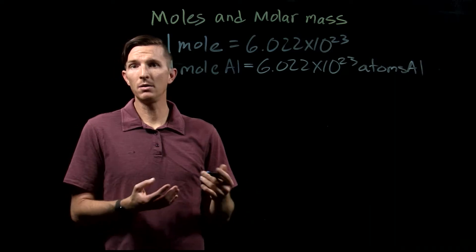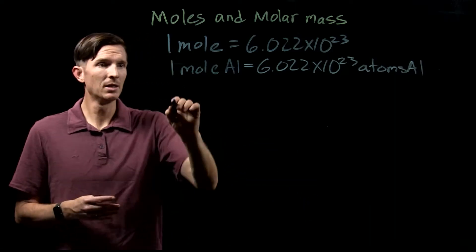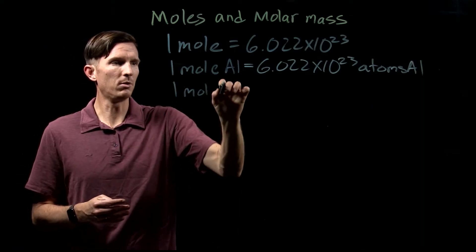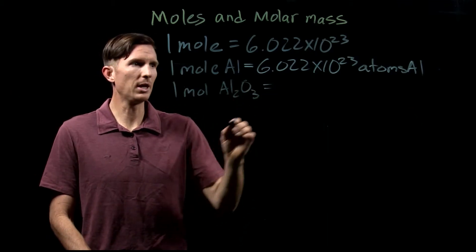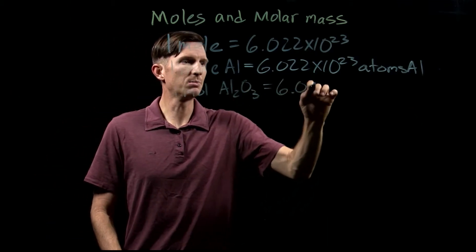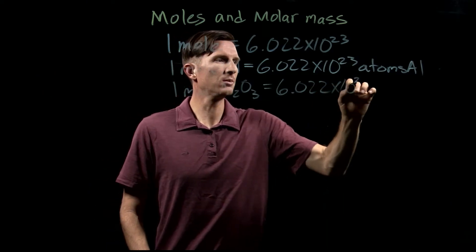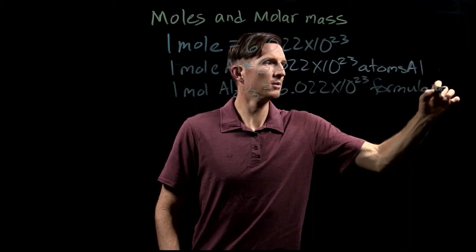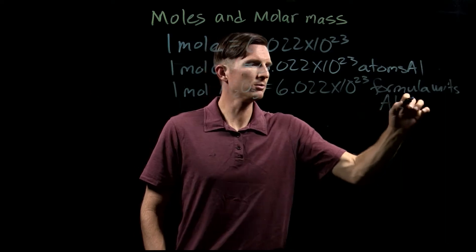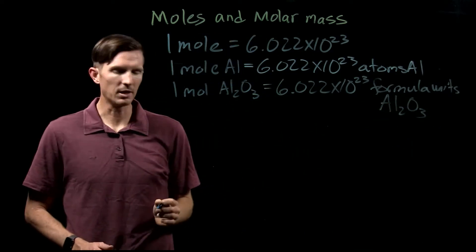Or if I'm talking about a compound, I could say I have one mole of aluminum oxide. That means I have 6.022 times 10 to the 23rd formula units of Al2O3, or aluminum oxide.